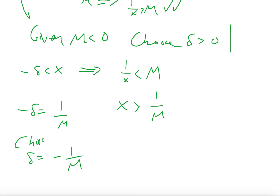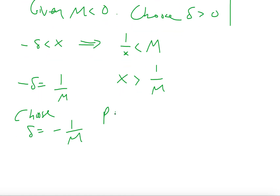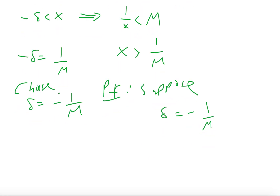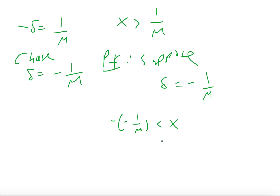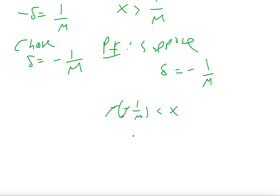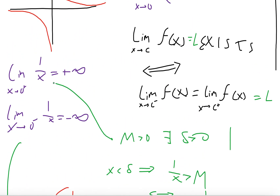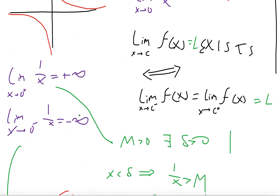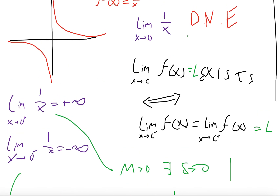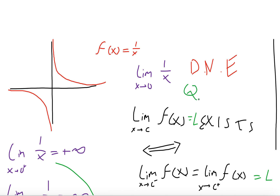So if we choose delta equal to negative 1/M, then for our actual proof: suppose delta equals negative 1/M, which means negative of (negative 1/M) is less than x, which means x is greater than 1/M, which just means 1/x is going to be less than M. You've proved it. And now that we proved both statements — that the right-hand limit is positive infinity and the left-hand limit is negative infinity — we can say these are not equal, obviously, because one is positive infinity and one is negative infinity. Therefore, the two-sided limit does not exist. QED.